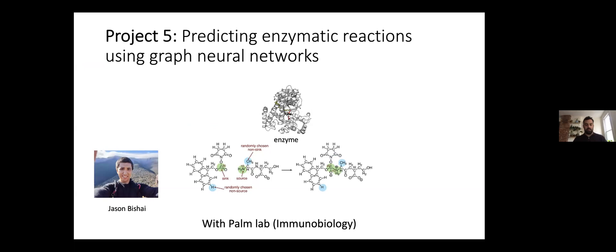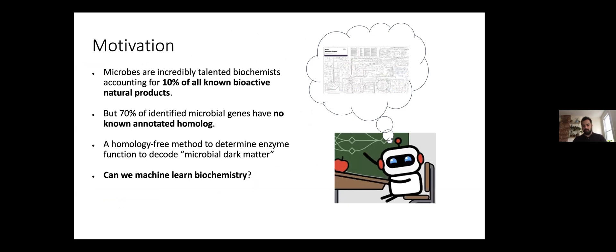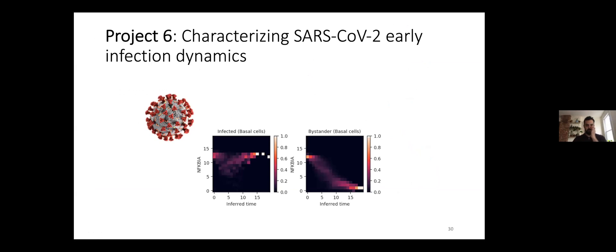This is a project led by Jason, who's a student in my lab, and he just joined the lab. This is very much a new project. It's together with the Noah Palm lab in immunobiology, and the idea there is to predict biochemical reactions, enzymatic reactions, using deep learning. The motivation of this project is that the majority of microbial genes are not annotated, but they are involved in all kinds of biochemical processes. We want to use deep learning to annotate these unknown genes such that we know their function and then potentially can use that function.